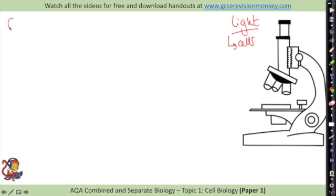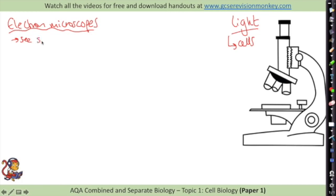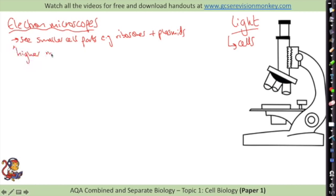The better microscopes to use are electron microscopes that use beams of electrons rather than light. Electron microscopes are really expensive so it's not something you'd probably see within school. But they allowed scientists to see smaller parts of cells such as ribosomes and plasmids, which are rings of DNA. These electron microscopes have a higher magnification so you can zoom in further, and they also have a higher resolution.